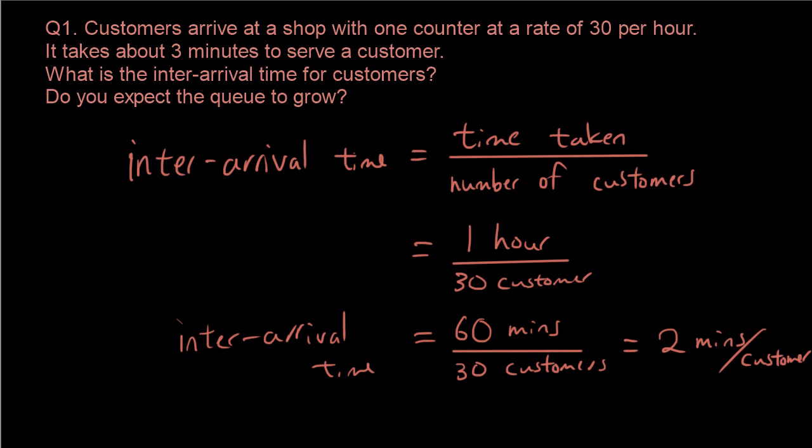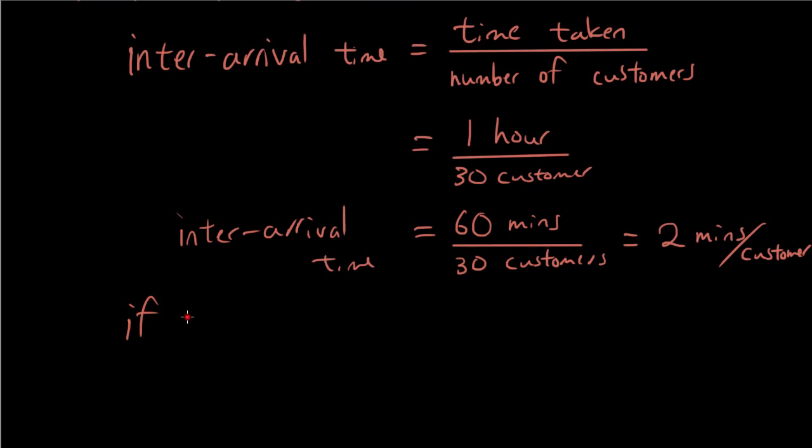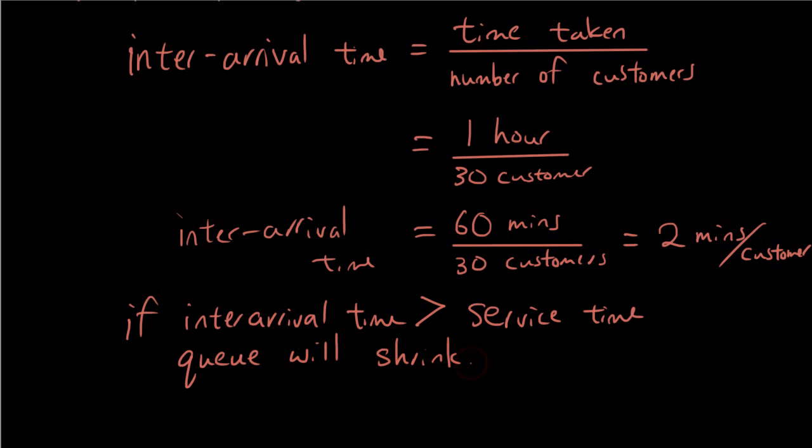Now, if you remember our rule: if the inter-arrival time is greater than service time, the queue will shrink. Because if you think about it, let's say it takes 1 minute to serve a customer, but customers only arrive once every 2 minutes. Then 2 is greater than 1, so the queue will get smaller and smaller.